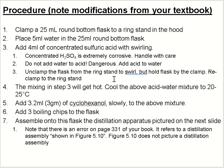Now for the procedure from your textbook: clamp a 25 mL round bottom flask to a ring stand in the hood and place 5 mL of water in the flask. Add 4 mL of concentrated sulfuric acid with swirling. Remember — do not add water to acid, it is dangerous; always add acid to water. Be careful because sulfuric acid is extremely corrosive. The mixing step will get hot, so let it cool to room temperature. Then add 3 grams of cyclohexanol, which is 3.2 mL, slowly to the mixture, and add 3 boiling chips to the flask.